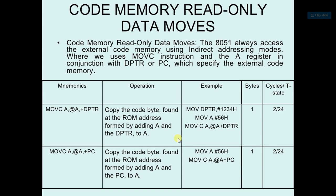See the example: MOV DPTR, #1234H and MOV A, #56H. So we have DPTR and A loaded with some values, and then MOVC A, @A+DPTR. It will add the addresses and form the new address, then fetch the data from that address.